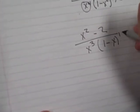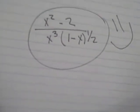So you're left with x squared minus 2, divided by x cubed times 1 minus x squared to the positive one half. And now you're happy. Yay! Bye!